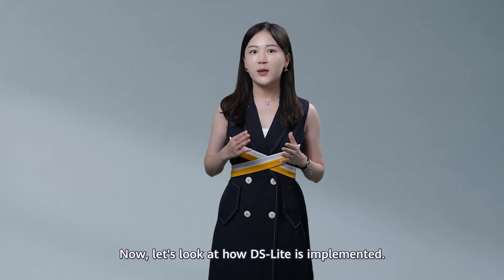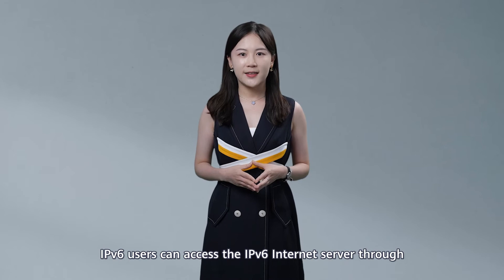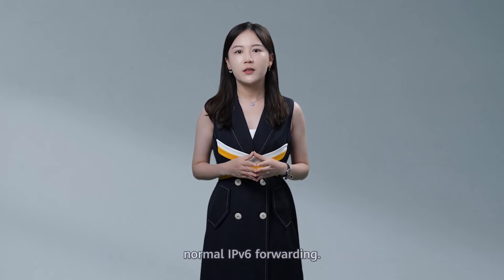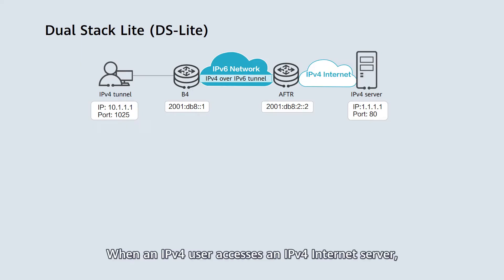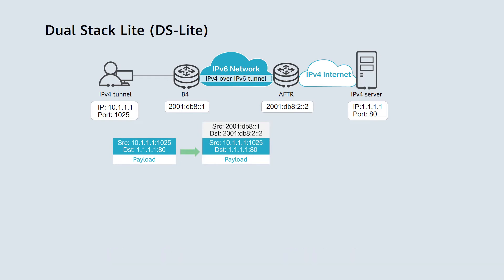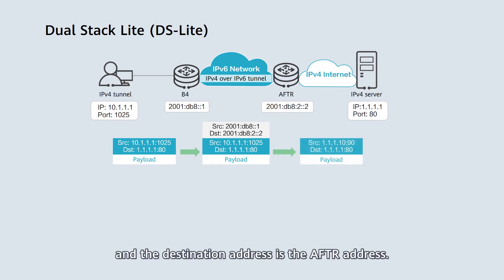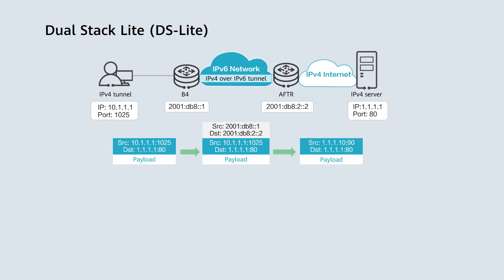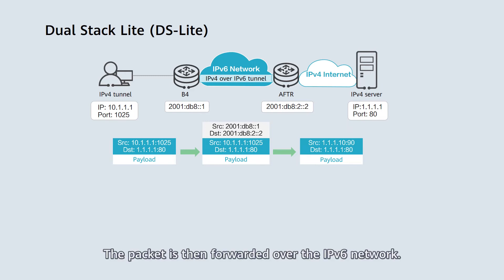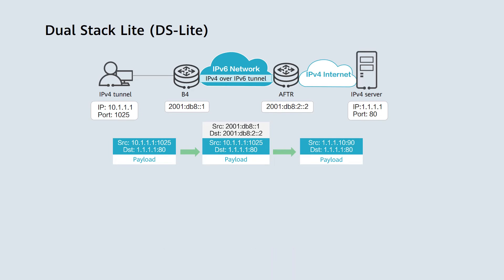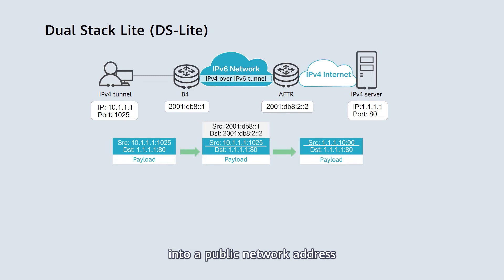Now let's look at how DS-Lite is implemented. IPv6 users can access the IPv6 internet server through normal IPv6 forwarding. When an IPv4 user accesses an IPv4 internet server, the B4 adds an IPv6 packet header to the IPv4 packet. The source address in the IPv6 packet header is the B4 address, and the destination address is the AFTR address. The packet is then forwarded over the IPv6 network. After receiving the packet, the AFTR decapsulates it, removes the IPv6 header, and translates the private network address and port number in the IPv4 packet into a public network address and corresponding port number to communicate with the IPv4 server.